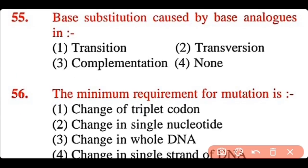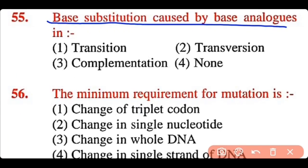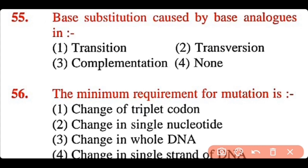Question 55: The base substitution caused by base analogues is: transition, transversion, complementation, or none of these. The correct answer is option 1. Base substitution caused by base analogues is a case of transition.